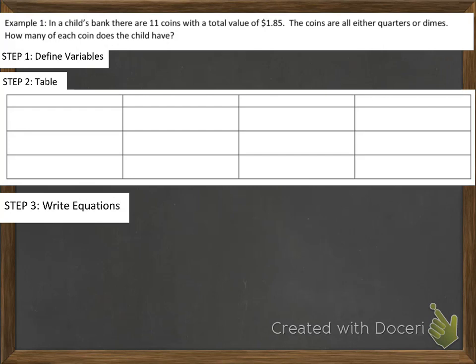Let's begin. Example one says: in a child's bank, there are 11 coins with a total value of $1.85. The coins are all either quarters or dimes. How many of each coin does the child have? In step one, we need to define our variables. The variables we're looking for will always be indicated by the last sentence of the word problem — it says, how many of each coin does the child have?